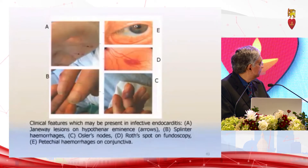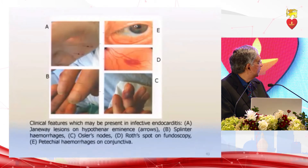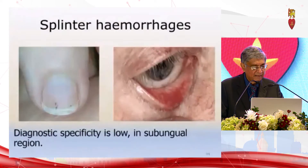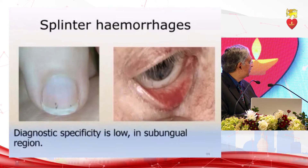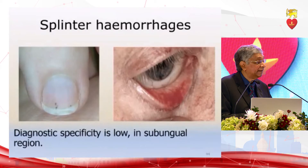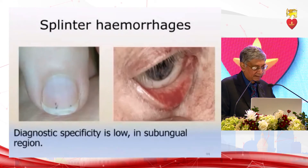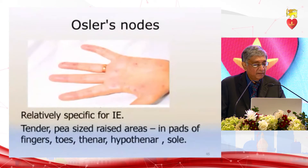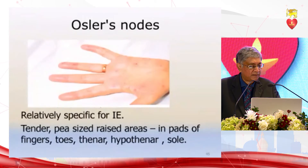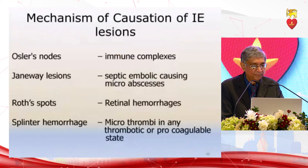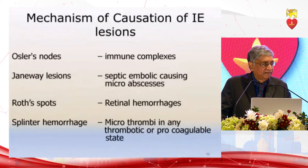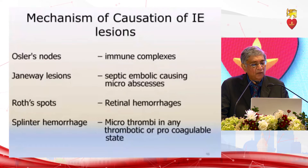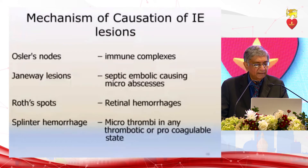Splinter hemorrhages in the nail bed, Osler's nodes on the pulp of the finger, Roth spots on fundoscopy, and petechial hemorrhages in the eyelid. The diagnostic specificity of splinter hemorrhages is very low — it looks like a spot of grain under the fingernail, but you can have it in other conditions as well. Osler's nodes are relatively specific for infective endocarditis — tender small raised areas on the pads of fingers and toes, the thenar and hypothenar eminence, and the sole. Osler's nodes are known to be immune complexes; Janeway lesions are thought to be septic emboli causing micro-abscesses; Roth spots are retinal hemorrhages; splinter hemorrhages are microthrombi in pro-coagulant states.